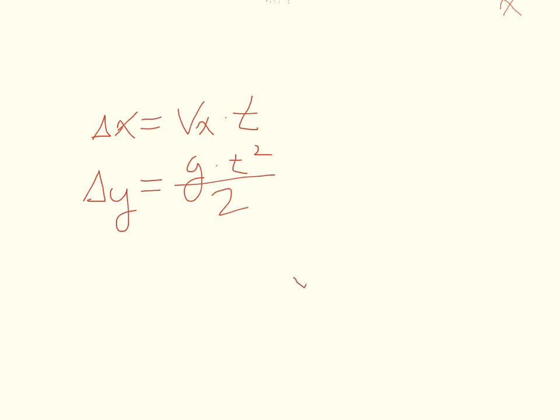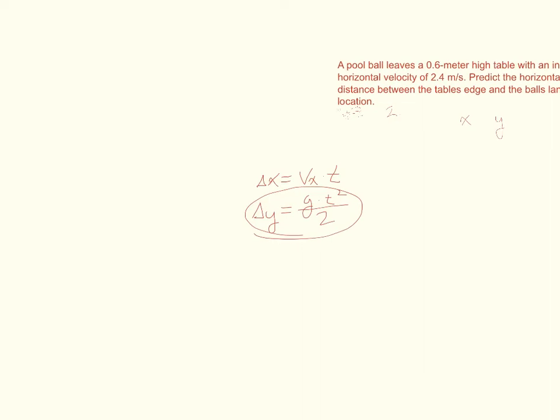However, I can find one of those variables using my other equation, my y equation because I'm given the height of the pool table and I know the acceleration due to gravity so I'll use this equation here to solve for time and I can use that time in the first equation. So let's do that in step four of our four-step process, actually solving for the equation.